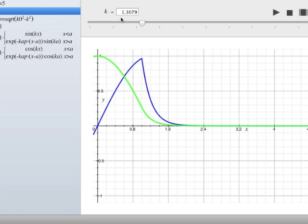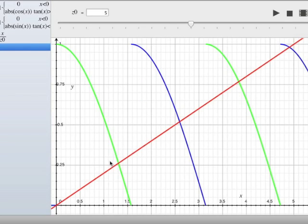So 1.3 is the value of k that not only satisfies the continuity, notice I got this thing set up so the continuity is always there, but the derivative has a kink in it except at certain special values of k, and those values of k are the ones that solve the transcendental equation.